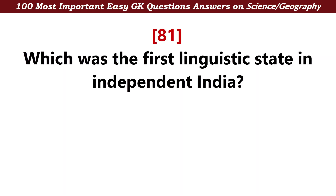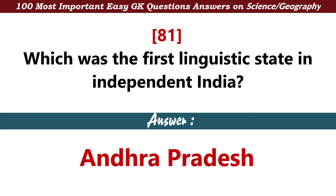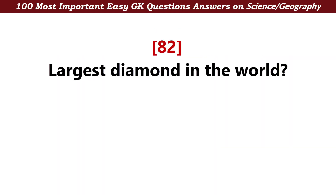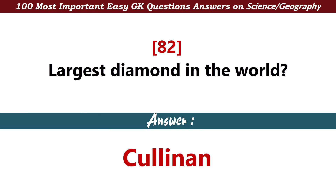Which was the first linguistic state in independent India? Answer: Andhra Pradesh. What is the largest diamond in the world? Answer: Cullinan.